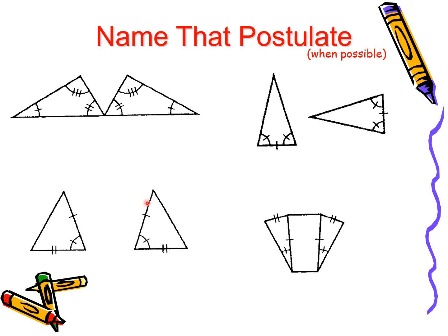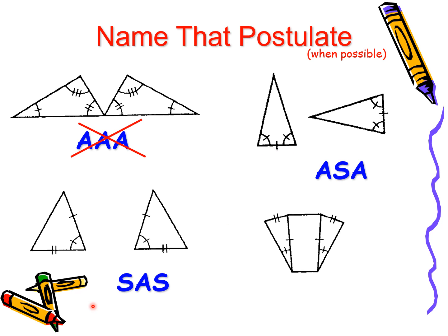Now let's have another set. The first one is AAA — angle, angle, angle — which is a big no. The second one is ASA — angle, included side, angle. The third one is SAS — side, angle, side. And the fourth is side, side, angle — which is a big no.